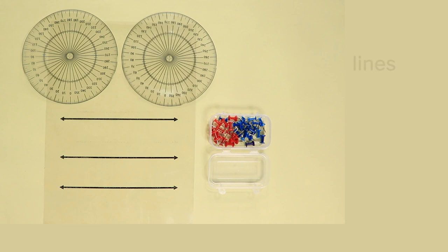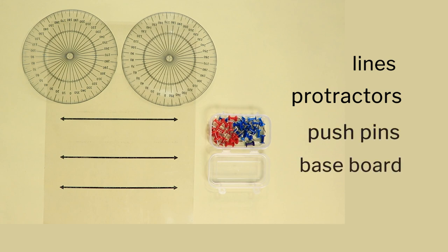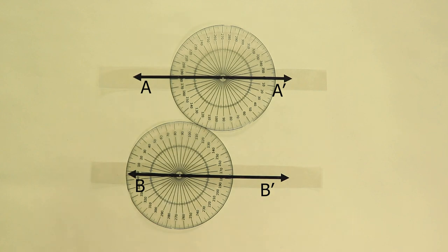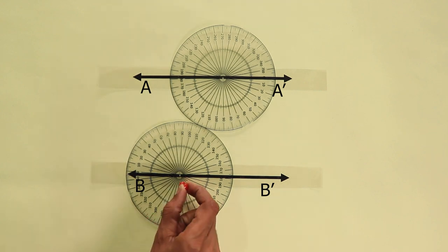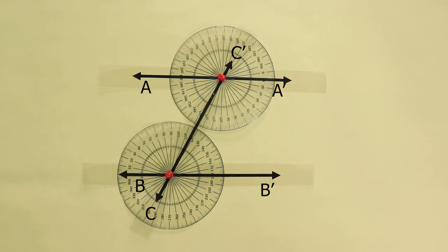We need transparency cutouts of lines and protractors, along with pushpins and a baseboard. Hand out this set to groups of students. Let them label these lines as A, A dash, B, B dash and C, C dash. Ask students to align A and B. Using pushpins, let line C intersect them along with the protractor, and label these points of intersection as I and I dash.